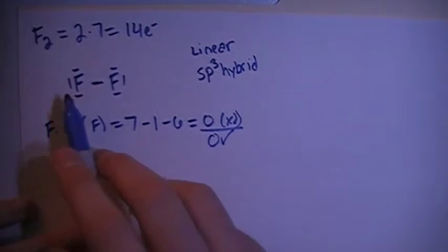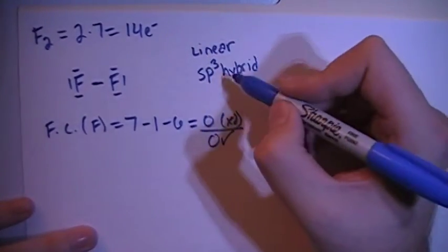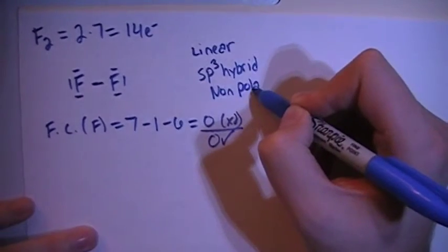And because these are both fluorines, they're both the same kind of atom, that means their polarities will cancel out, making this a non-polar compound.